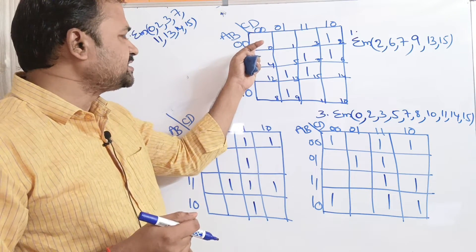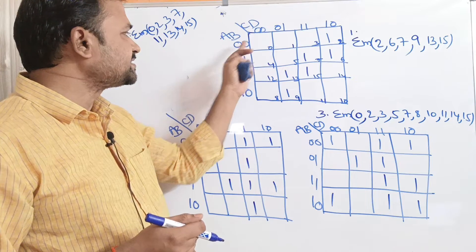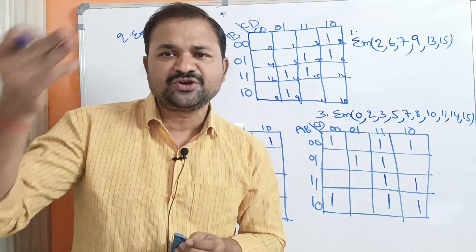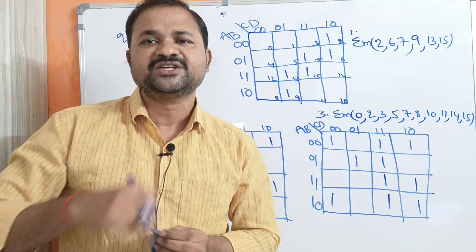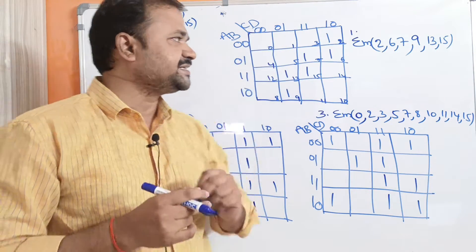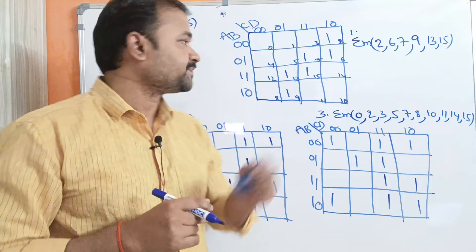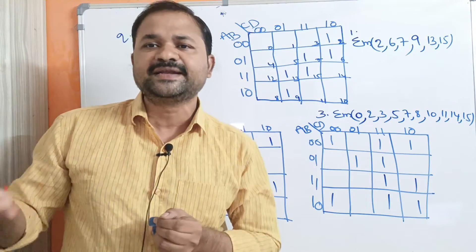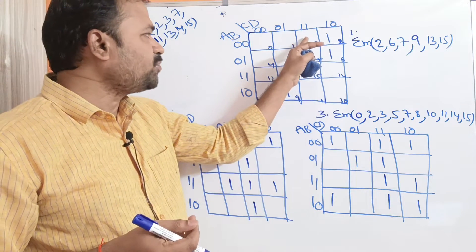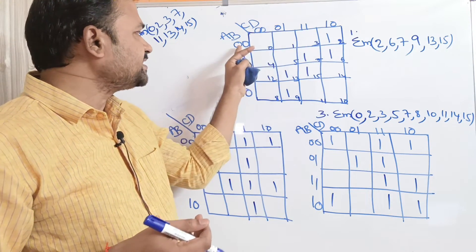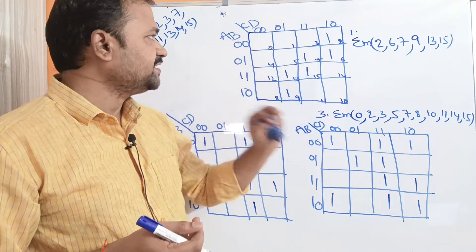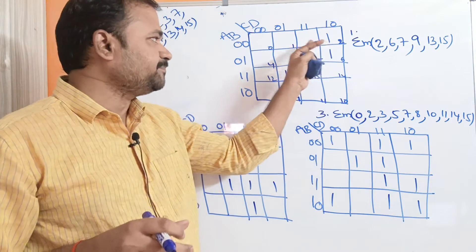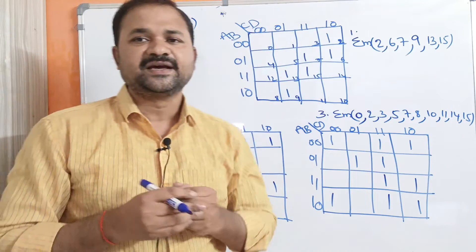Let us observe this cell. This cell represents 0000, which in decimal notation is 0. So this cell represents minterm 0, written as A-bar B-bar C-bar D-bar. Another cell represents 0011, which in decimal notation is 3, so it represents the third minterm.